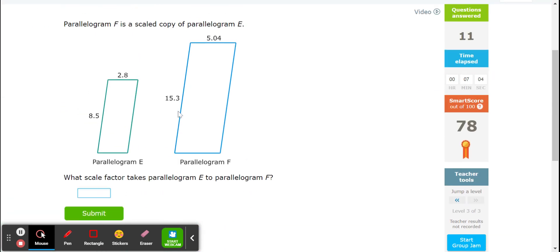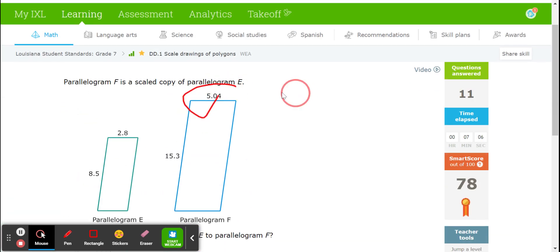Almost there. I'm looking for a scale factor. Scale factor is 5.04 divided by 2.8. I'm going to put that into my calculator to see if that can be simplified. And it equals 1.8. Done.